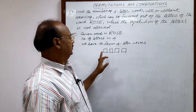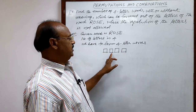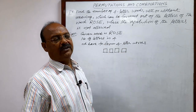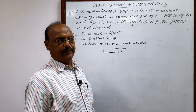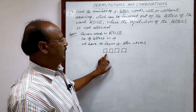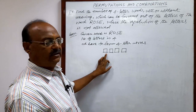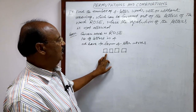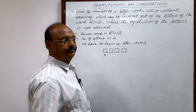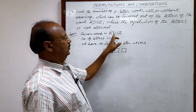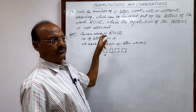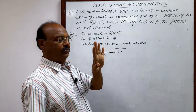Suppose this is the first position, second position, third position, and fourth position of the letters. In the first position, we can select a letter in how many ways? Four ways — out of R, O, S, E, we can take any one of these four, so we have four options.